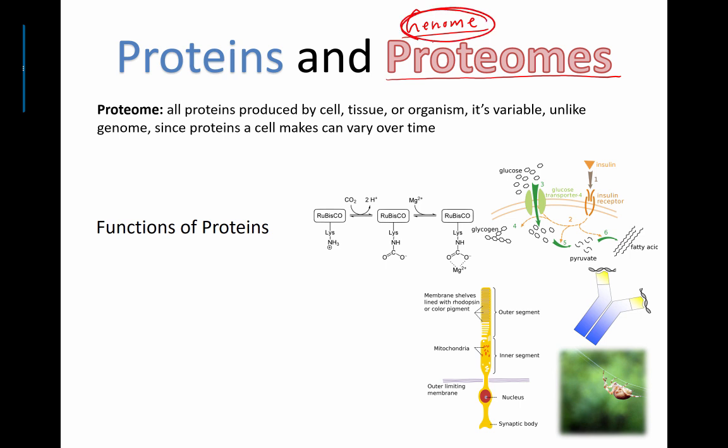So if you go from genome and go one step further, there's this idea of something called a proteome. The proteome is basically all the proteins that are produced by cells, tissues, or organisms. And just like your genome is unique to mine, your proteome is also unique to mine. In general, we make a lot of the same proteins, enzymes, and hormones, but the specific types, kinds, or amounts that you produce are different between all living organisms.